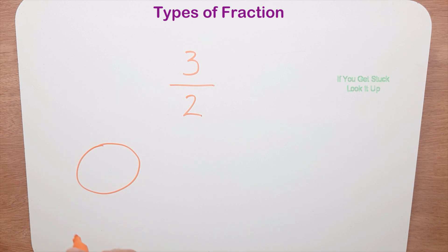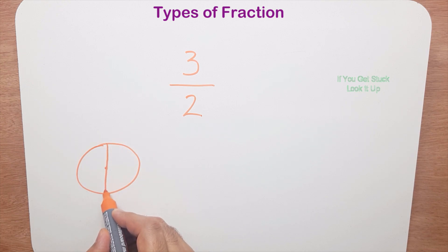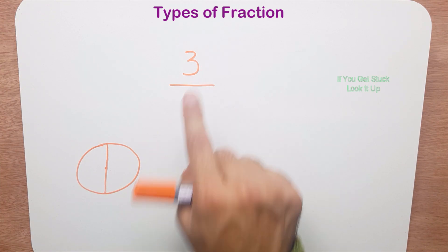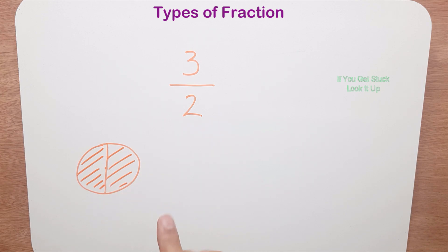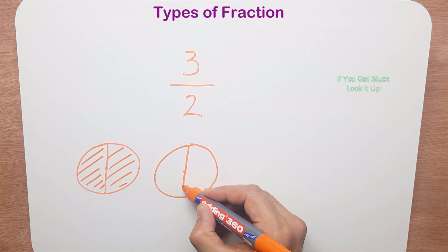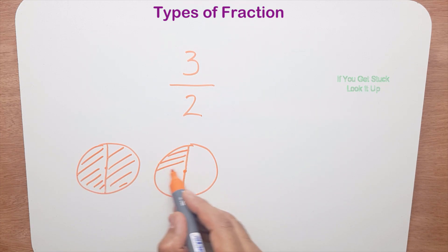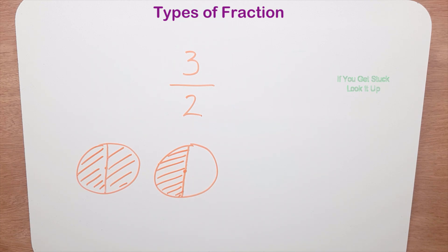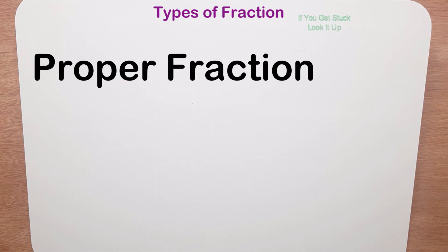Now how do we draw this? Let's look at the bottom number first — I want each pizza to be cut into two equal pieces. So there's the center, I'm going to draw a line straight down. I have one, two equal pieces. But looking at the numerator, I want three of those pieces. I've got one, two — so I haven't got enough. I have to go back and make another pizza. Again there's a center and I'm going to cut it into two equal pieces straight down the middle.